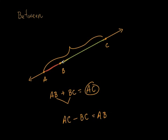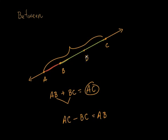It doesn't have to be dead in the middle for B to be between. It just has to have A on one side and C on the other side. What if I stuck another letter D in here? I could say that D is between B and C, but D is also between A and C. And B could be between A and C, but I could also say that point B is between A and D. So there are a whole bunch of things that can be between, and that's basically the idea of betweenness.